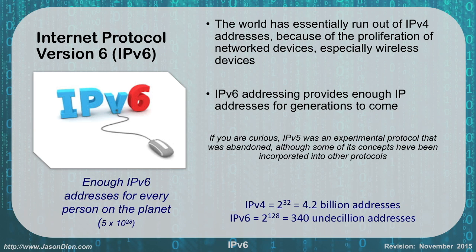Some people always ask what happened to IPv5. Basically, it was an experimental standard that was abandoned. It worked with 64-bit addressing, and they decided, just to play it safe, to go to IPv6 and use 128-bit. A lot of the stuff that was in IPv5 did get put into IPv6, though.